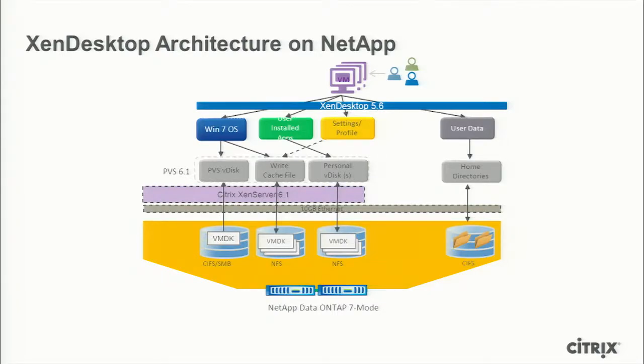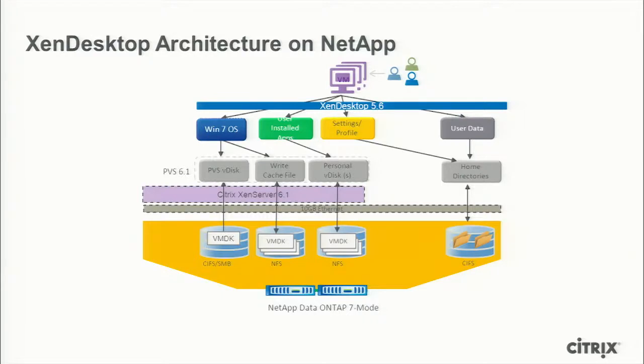You have the vDisk, which is the virtual disk that gets uploaded on the PVS server — that could be stored locally or on the backend controllers. Then you have your write cache. Remember, this is a pooled model, so all the reads go from the base OS, but all the writes — when the user's doing activities and needs to do a temporary write — go into this write cache. What happens to that write cache when the desktop is rebuilt? It gets flushed. That's how you don't have persistence in this pooled model — the cache gets flushed and the next user comes in. There's also the user data stored on file shares.